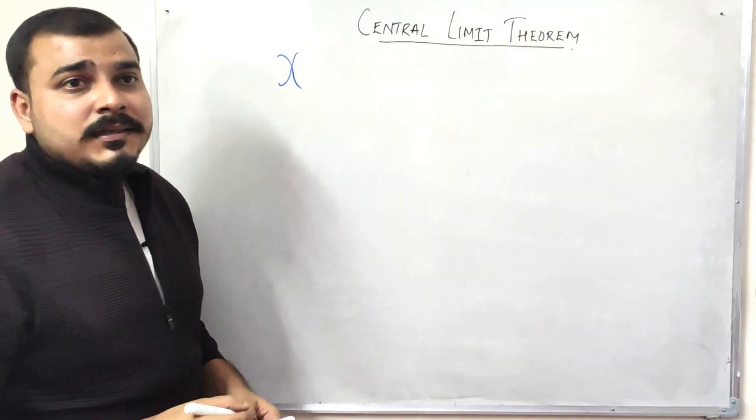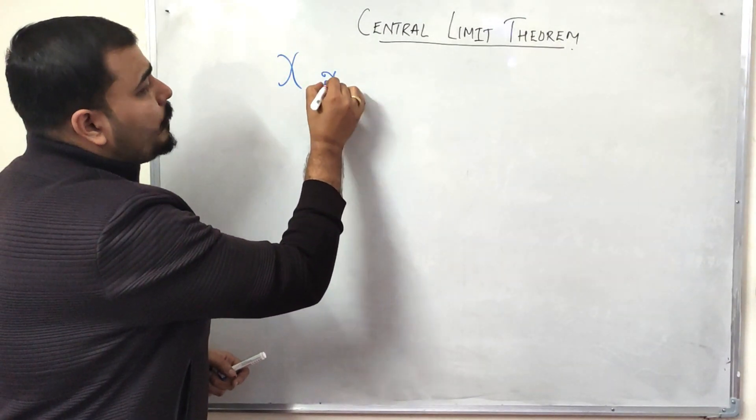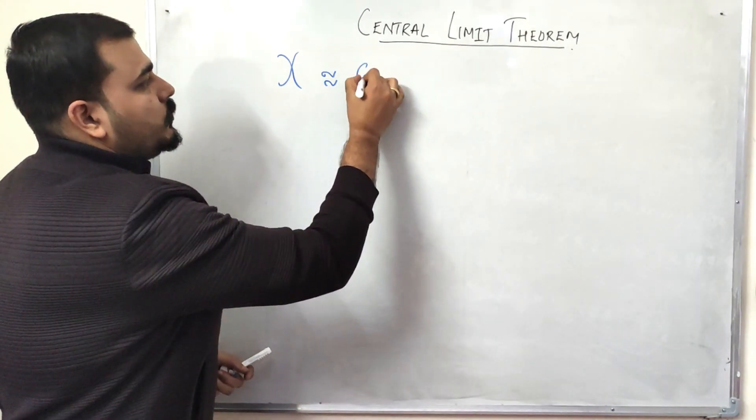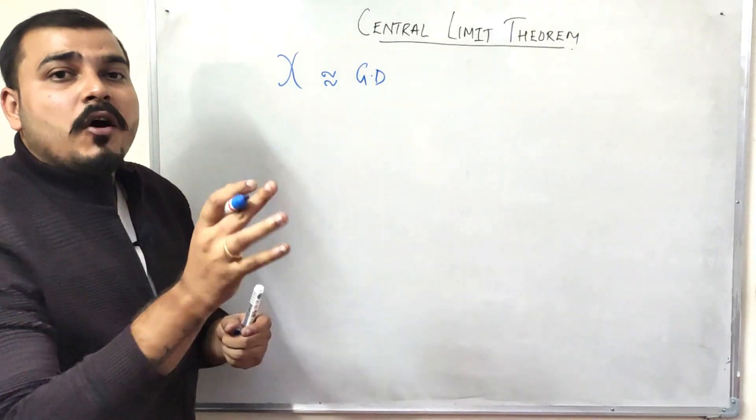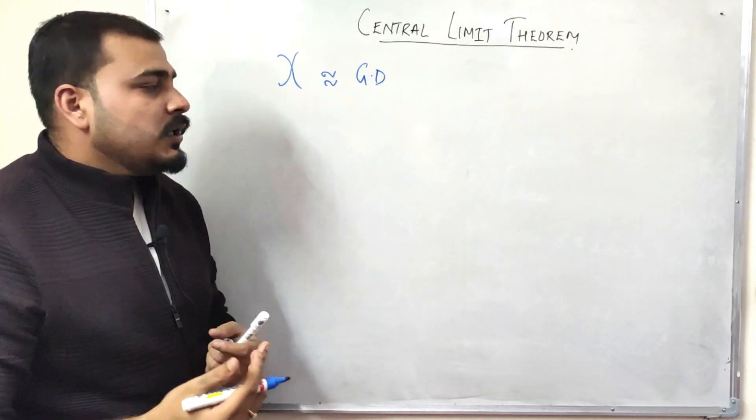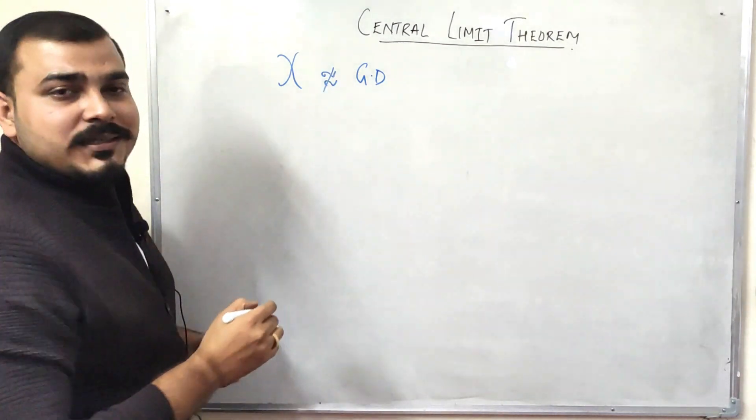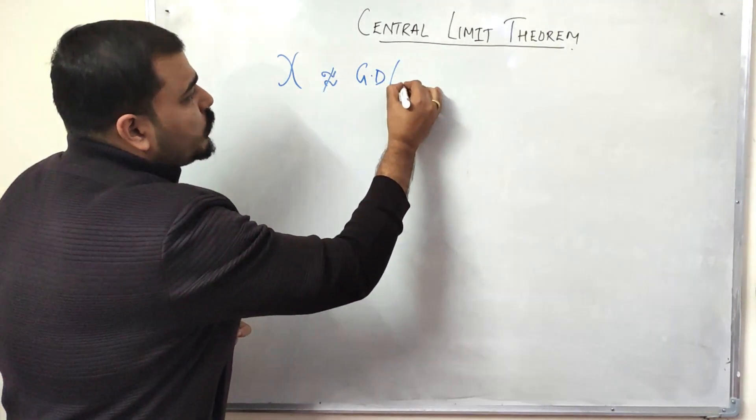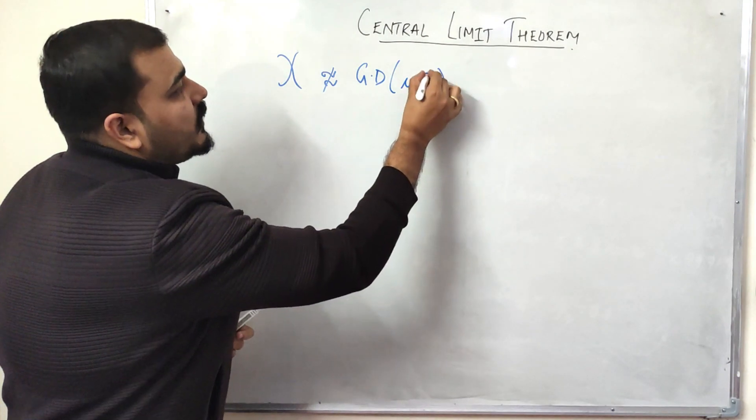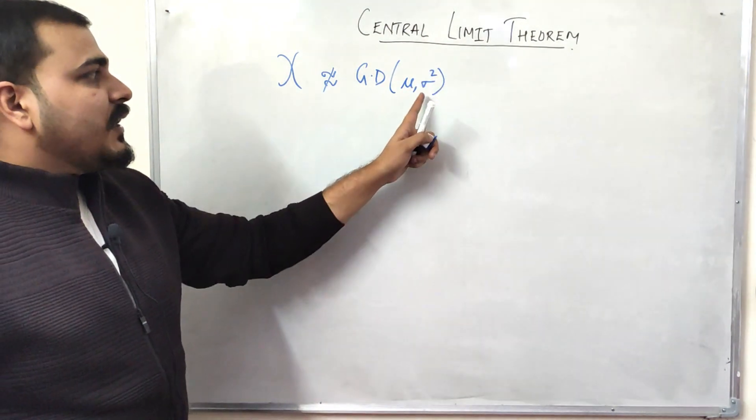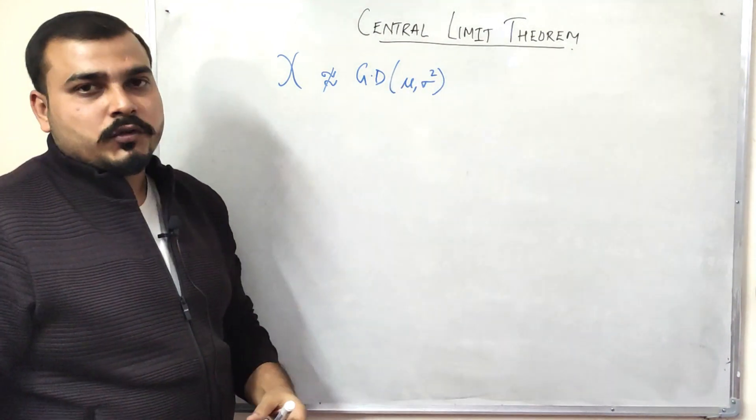Suppose I consider a random variable X, and this may or may not belong to a Gaussian distribution. This will have some mean and standard deviation or variance value. Suppose if I consider variance, I can write it as σ² (sigma square).